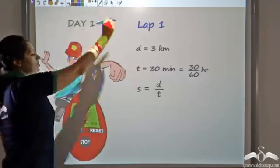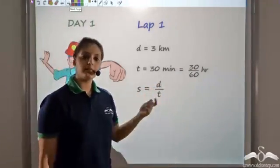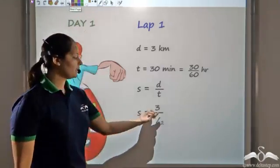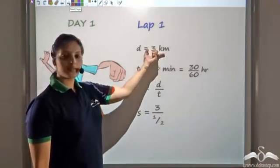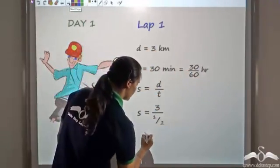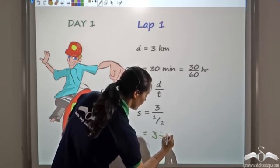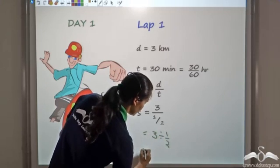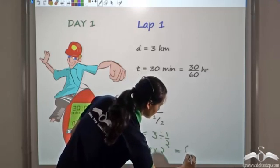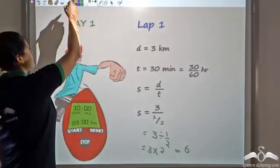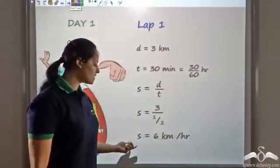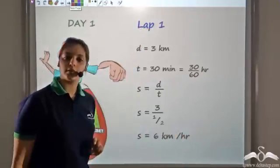Now, if you want to find the speed, we know speed is distance by time. So let's find his speed, which would be 3 by half — 3 km is the distance, time is 30 by 60 which is half hour. So dividing the two, I get 3 divided by half, which is nothing but 3 times 2, which gives me 6. That is, his speed is 6 km per hour. So his speed in the first lap is 6 km per hour.